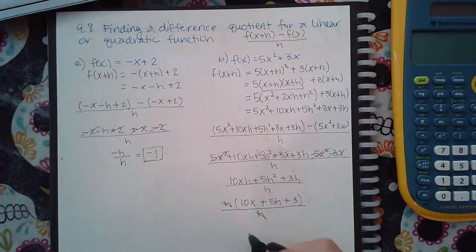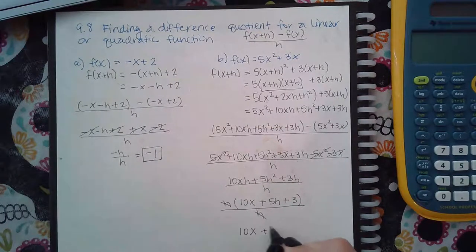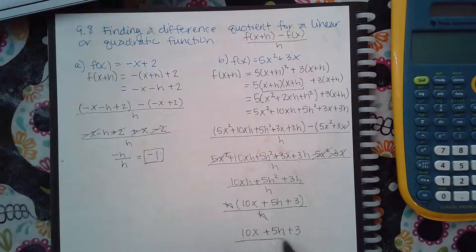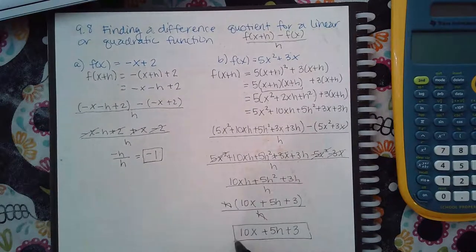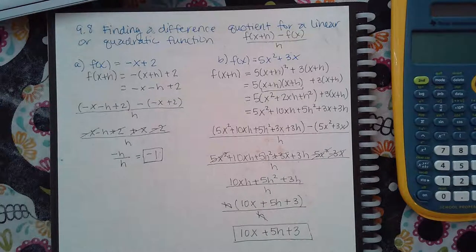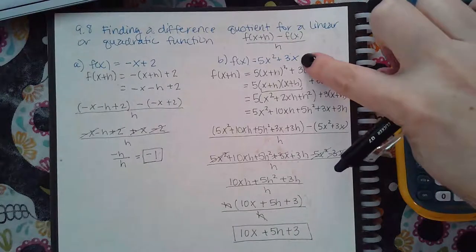And so then what I'm left with is this expression 10x plus 5h plus 3, which cannot be simplified anymore. None of those are like terms, so it cannot be combined. That is the final expression there for this function, quadratic function.